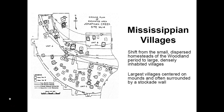With growing populations fueled by increased productivity of maize agriculture, we see a shift from the small dispersed homesteads of the woodland period into large, densely inhabited villages. In this map of an excavated portion of a large Mississippian site in western Kentucky, you can see the dense arrangement of houses. The largest villages were centered on mounds and often surrounded by a stockade wall. In this map there are no mounds, but there is a stockade wall around the outermost portion of the village.